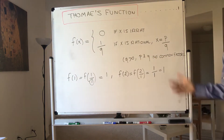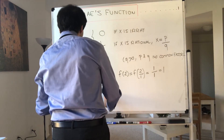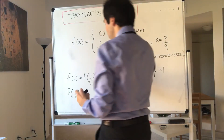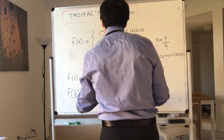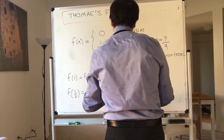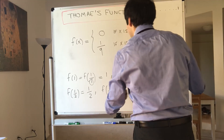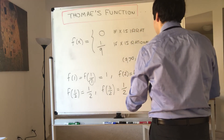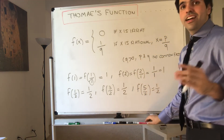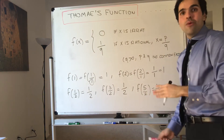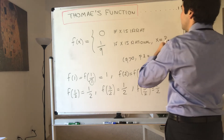Now let's continue: what is f of 1 half? Well, f of 1 half — 1 over 2 — so q is 2, so it is 1 half. But how about f of 3 halves? Well, p over q, so this becomes 1 over q, which is 1 half. And similarly, f of 5 halves is also 1 half. So at the half numbers — not integers, but purely fractions with denominator 2 — the function is 1 half.